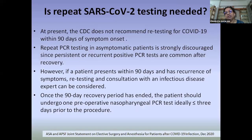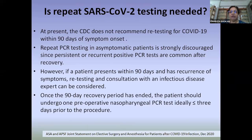This brings up the question: is repeat COVID testing needed before surgery? The CDC does not recommend retesting of patients within 90 days of symptom onset. Repeat PCR testing in asymptomatic patients is strongly discouraged, as persistent or recurrent positive PCR tests are common after recovery. However, if a patient presents within 90 days with recurrence of symptoms, retesting and consultation with infectious disease experts should be considered. After the 90-day period, the patient should undergo pre-operative nasopharyngeal PCR testing, ideally within 3 days prior to the procedure.